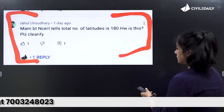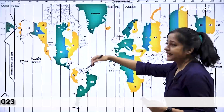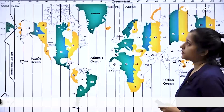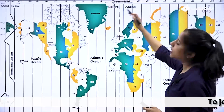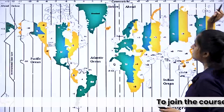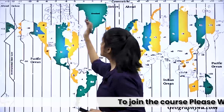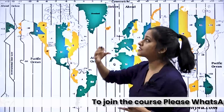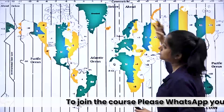Now let's move to the next slide. As shown before, when moving towards the eastern side, for every 15 degrees there is an increment of 1 hour. And when moving towards the western side, there is a decrement of 1 hour, because the sun rays are moving from east to west.